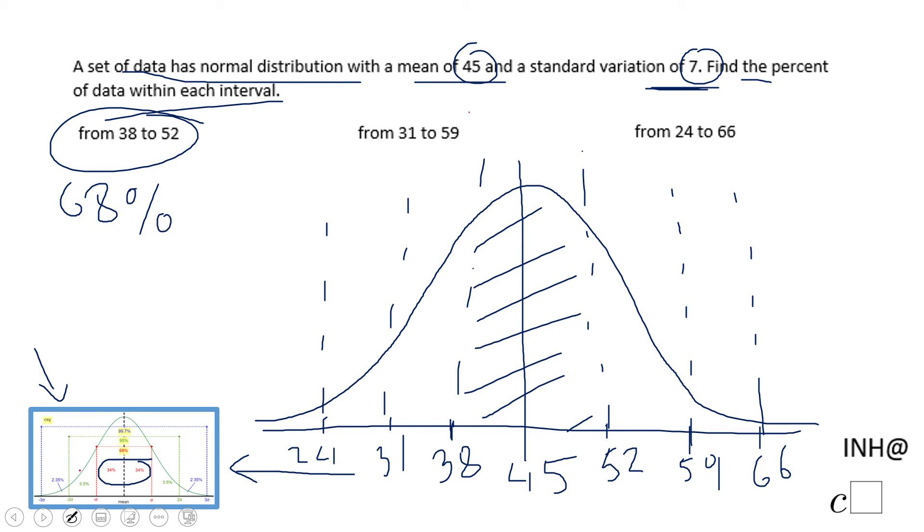But what about the second one, from 31 to 59? So if we look, this goes with this region, which is two standard deviations left, two standard deviations right. That will be the second number you see here: 95 percent of the data. Yeah, the empirical rule.